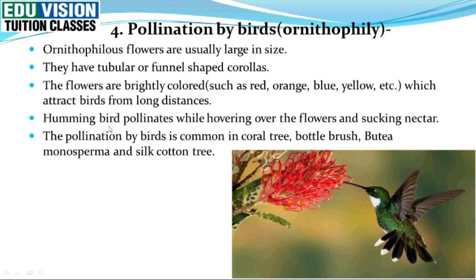For example, a hummingbird goes to a flower and collects nectar, causing pollination. Birds can pollinate plants like coral tree, water brush, monosperma, and silk cotton tree.